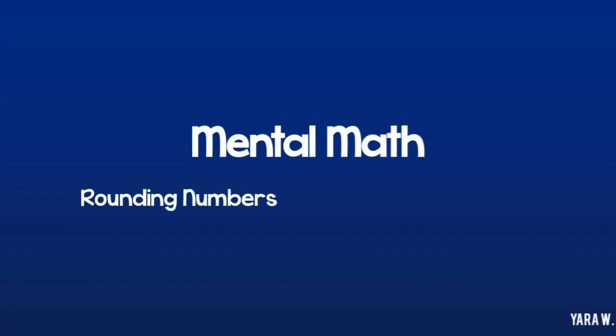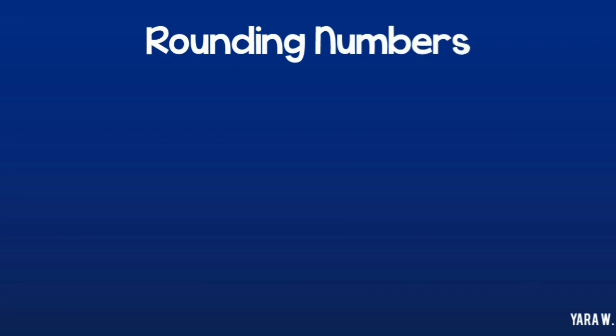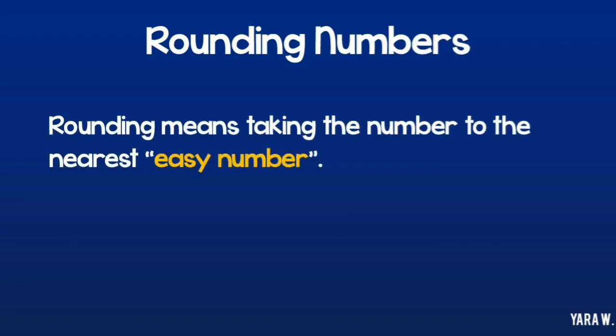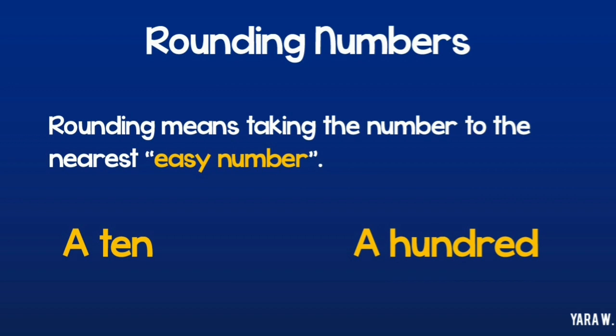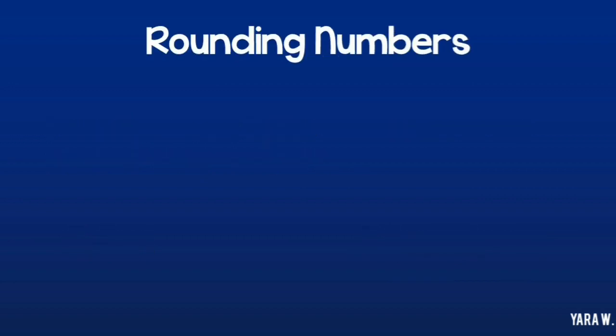We already know from the previous lesson that rounding numbers means I'm taking my number to the nearest easy number, which is a number that ends with zero, either a 10 or a 100. In today's lesson we will be focusing on rounding three-digit numbers to the nearest 10.